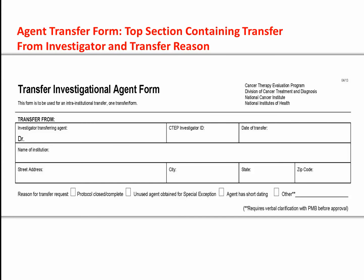The top portion lists information about the investigator who is transferring the agent. The transfer from investigator must be the investigator who either 1) originally ordered the agent, or 2) was the transfer to investigator on a previously PMB-approved transfer.